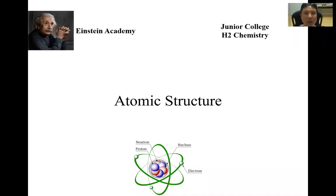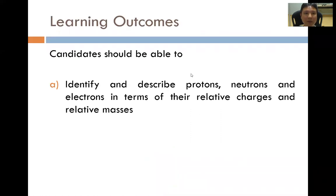Hello one and all. Welcome to another online video by Einstein Academy. In this video, we'll be looking at learning outcome A from the topic of atomic structure from the JCH2 chemistry syllabus. Specifically, learning outcome A states that candidates should be able to identify and describe protons, neutrons, and electrons in terms of their relative charges and relative masses.